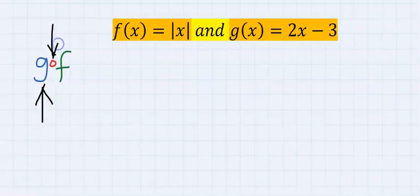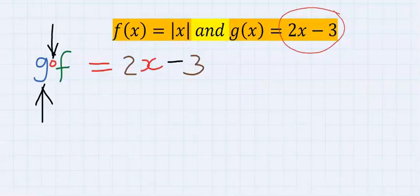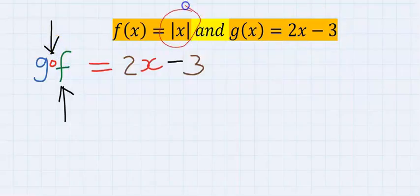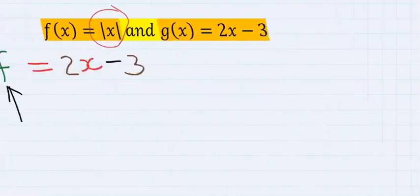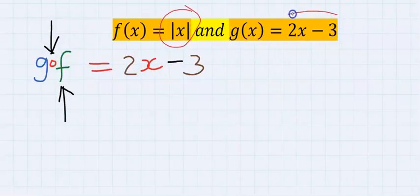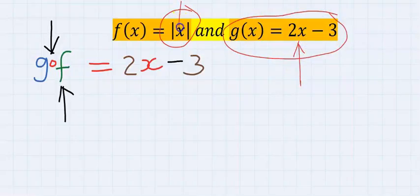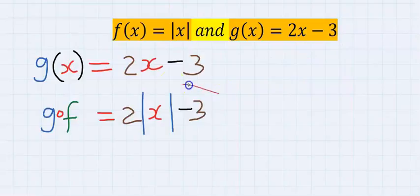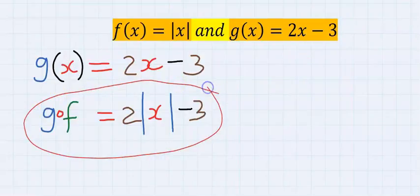Next, step number two: consider the function behind the composition, and here it is absolute value of x. Step number three: any position you see x in G(x), replace it with the absolute value. Hence we have just obtained G of F, which is G composite F.